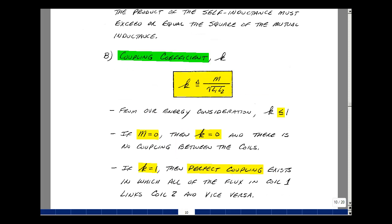A couple things we can say about the coupling coefficient. If there is no mutual inductance, the coupling coefficient is 0. In other words, there's no coupling between the two coils. If k is equal to 1, we'll describe that as perfect coupling, in which all of the flux in coil 1 links coil 2, and vice versa.